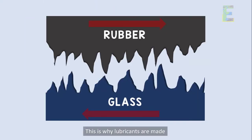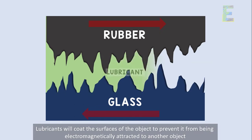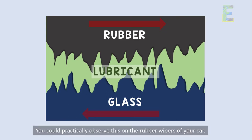This is why lubricants are made. Lubricants coat the surface of an object to prevent it from being electromagnetically attracted to another object.